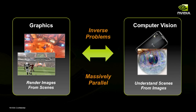One key observation about why this is so relevant and exciting for NVIDIA is that graphics and computer vision are both massively parallel tasks. The hardware needed for graphics turns out to be really ideal for computer vision. That was right about the same time NVIDIA had started introducing CUDA to make our GPUs even more programmable, so there's a clear benefit there.